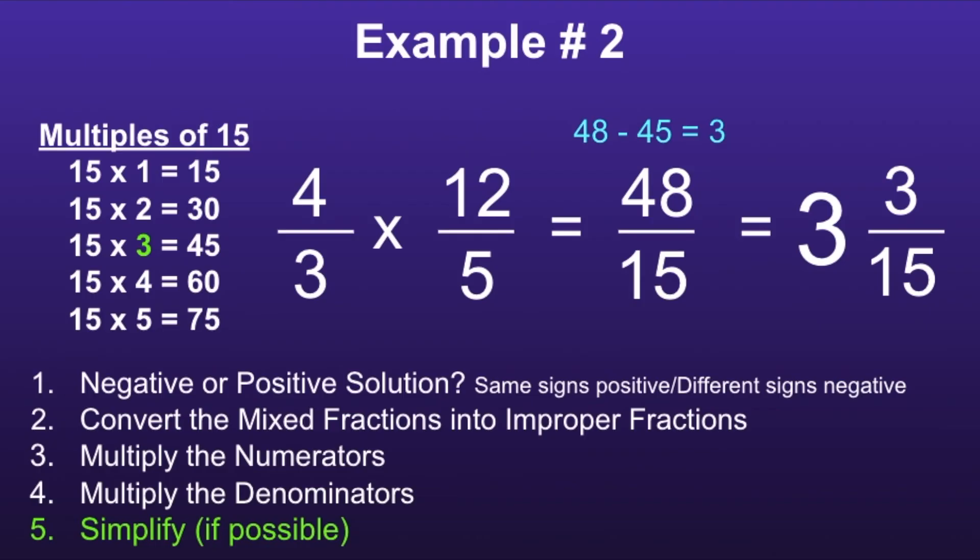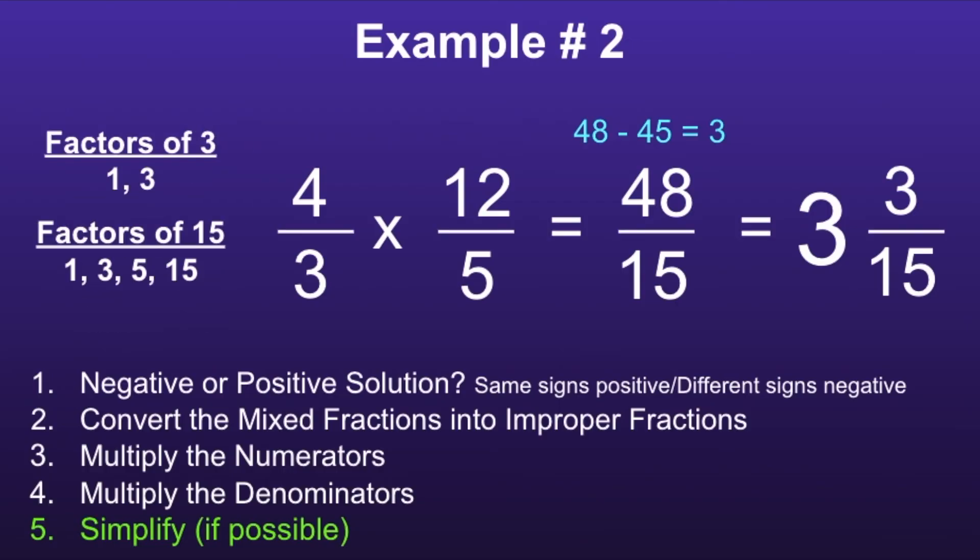Now the final step is to see if I can simplify three over fifteen. I can check this by pulling up the factors of both three and fifteen. When I do that, I can see that I have a common factor of three. So I can divide both the numerator and denominator by three. Three divided by three is one, and fifteen divided by three is five. So we can simplify three fifteenths down to one-fifth. And the final solution will be three and one-fifth.